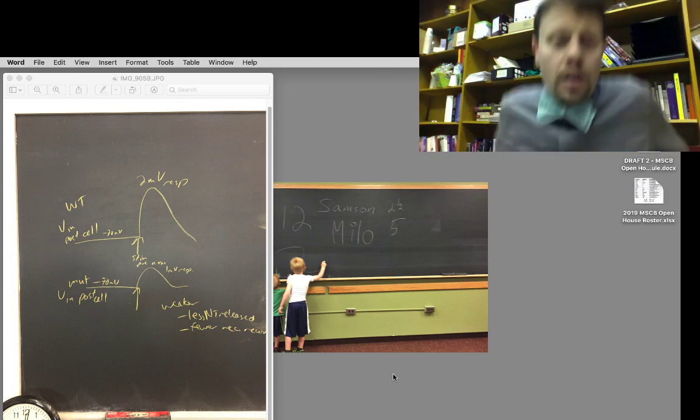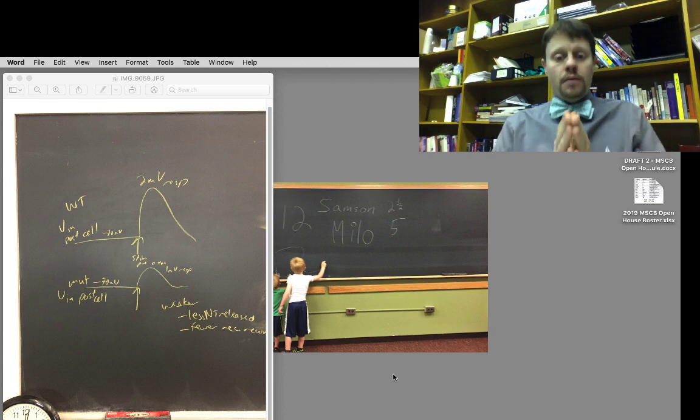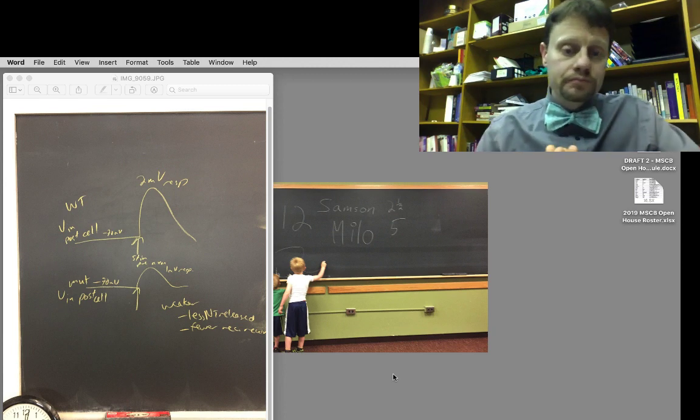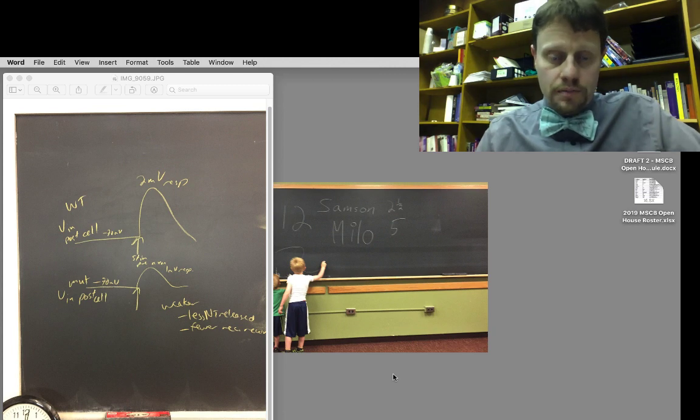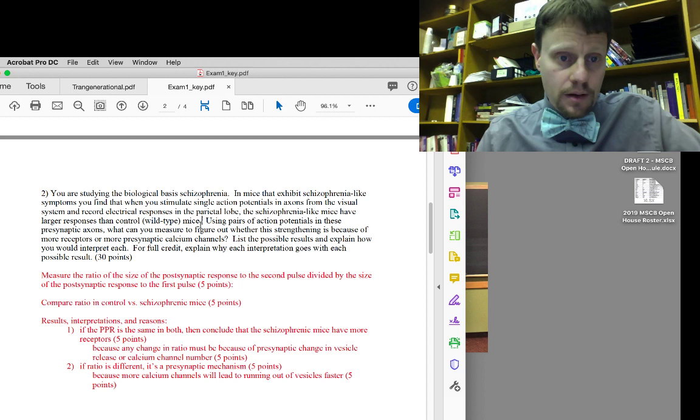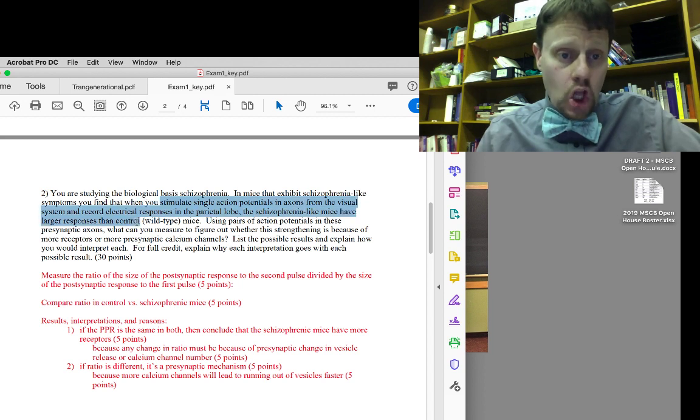I wanted to return now to question two from the first exam. In the first exam on question two, I told you in the question setup that with a single action potential from the axons from the visual cortex in the parietal lobe, schizophrenia-like mice have larger responses than control mice.